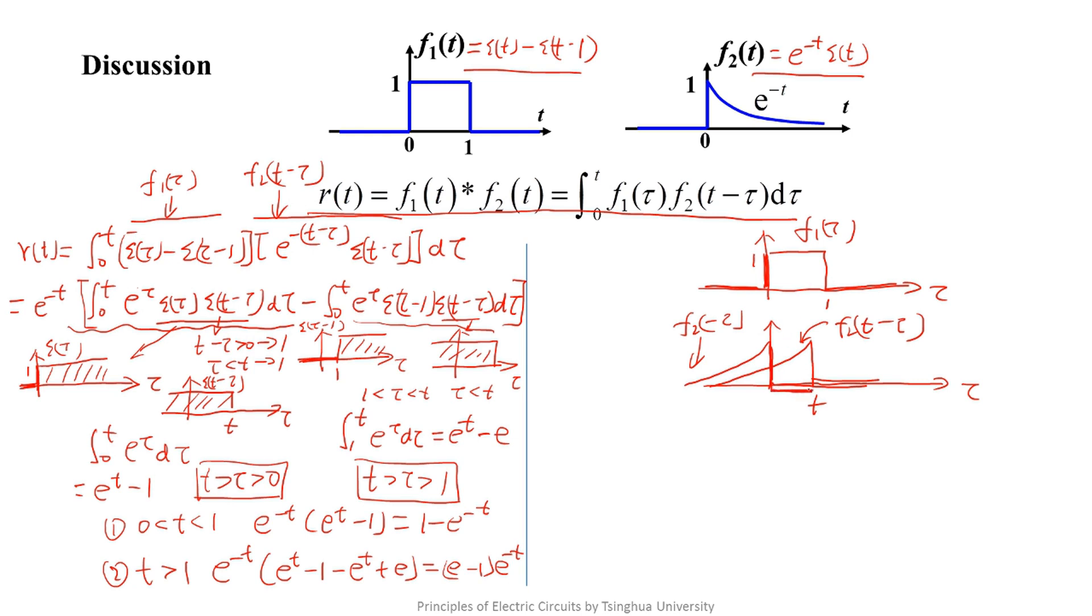So, when zero is less than t and less than 1, the limits of the integral is from 0 to t. The integral of 1 times e to the power of minus (t minus tau) d tau equals e to the power of minus t.